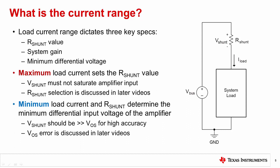While the current range itself does not drive any amplifier specifications, from it you can derive several key application constraints: the necessary R_shunt value, the required gain of the current sense amplifier stage, and the minimum differential voltage requirements. The implications of these constraints, including R_shunt selection and the effects of offset voltage on system accuracy, will be discussed in later videos.